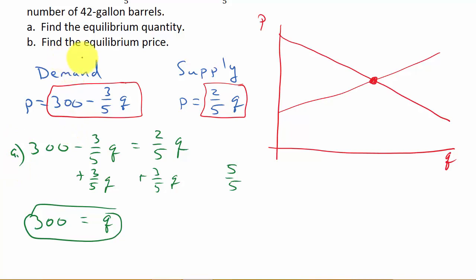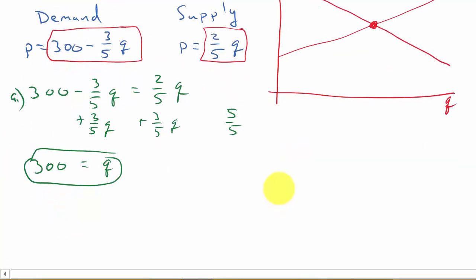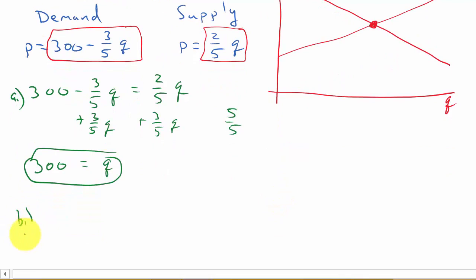For part B, they want us to find the equilibrium price. All we do is take the quantity we found and plug it into either function. I'll plug it into this one. So the equilibrium price is (2/5) times 300, which is